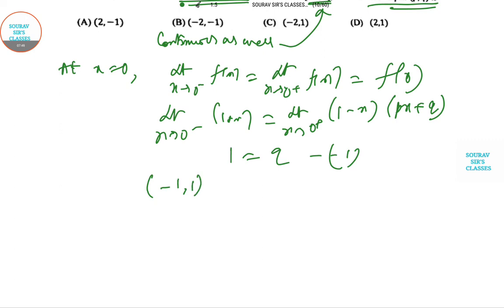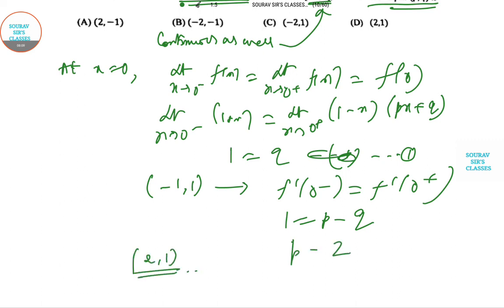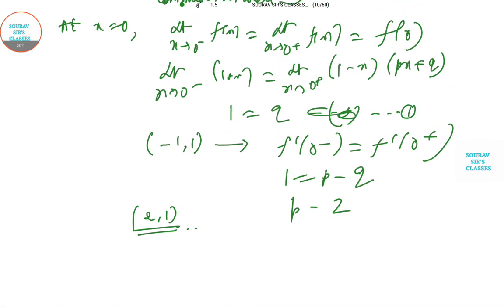F(x) should be differentiable in minus 1 to 1, so obviously F dash 0 minus is F dash 0 plus. So 1 equal to P minus Q. We got Q equal to 1, so putting it we get P equal to 2. The ordered pair is 2 comma 1. Rest of the things in my next video, thank you.